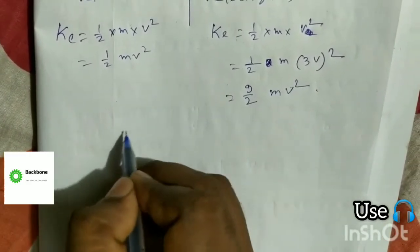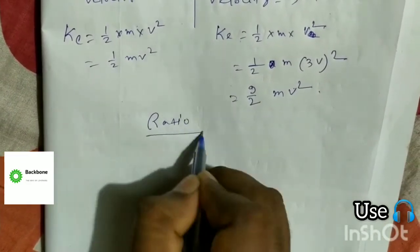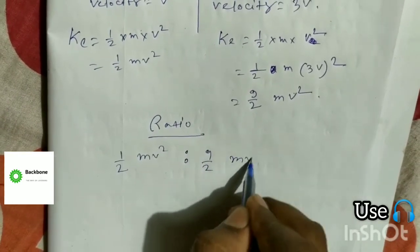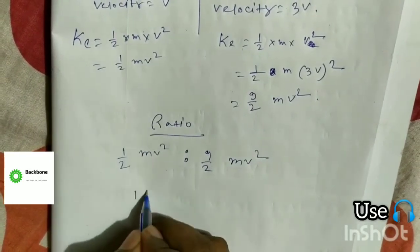The ratio KE1 to KE2 is equal to 1 is to 9.